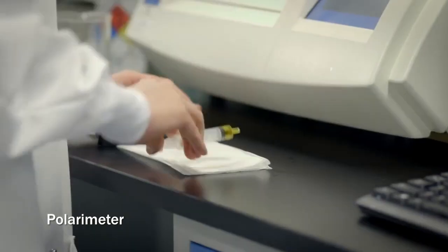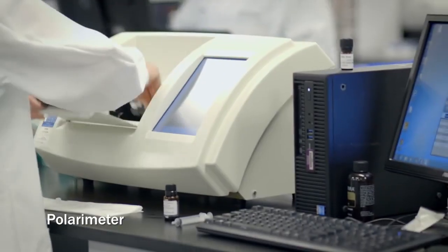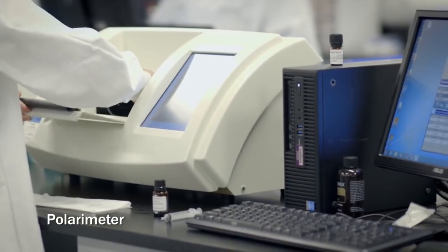Optical rotation, in which we use a polarimeter, tests the chirality of the molecule. Sometimes chiral molecules can be missed on GCMS, so it's another verification.